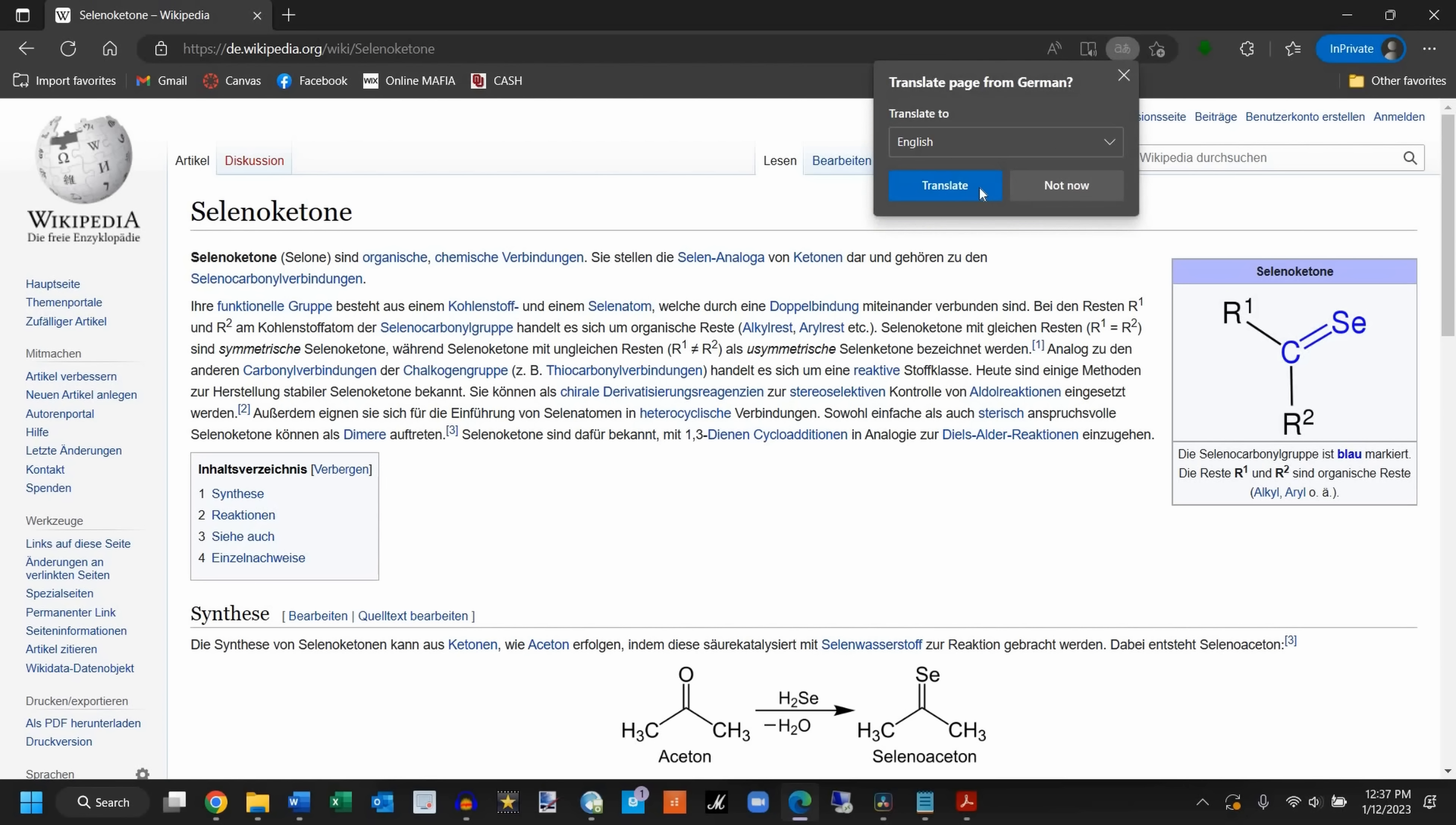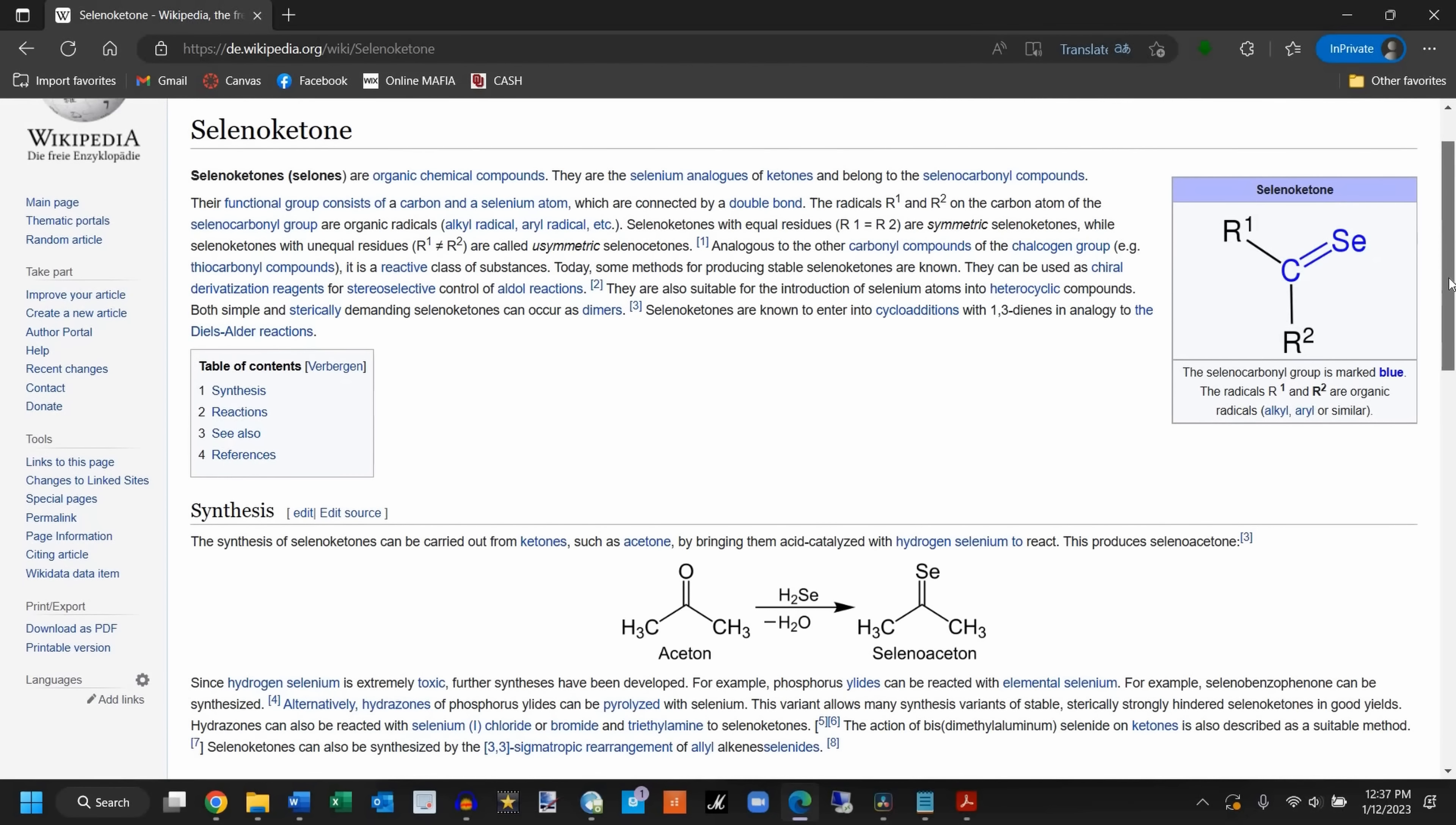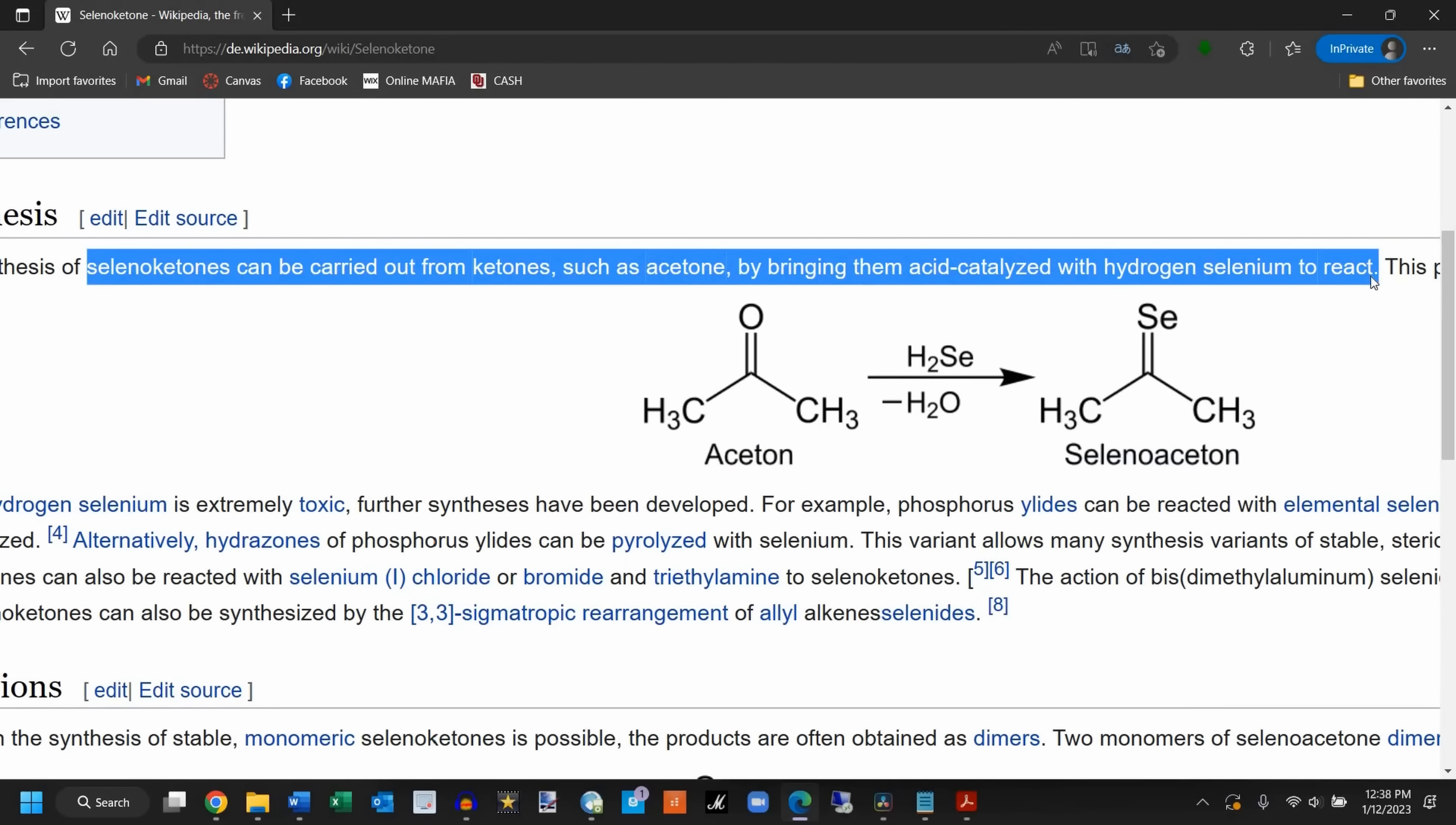One quick search, and I found a whole page on seleno ketones, which thankfully confirmed the existence of the elusive selenoacetone that I was after, and it even gave a brief description of its synthesis. Apparently, passing hydrogen selenide through acetone with some kind of acid catalyst is all it takes to get the red selenoacetone dimer.